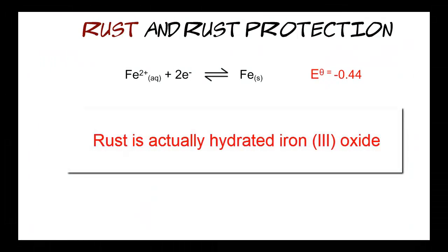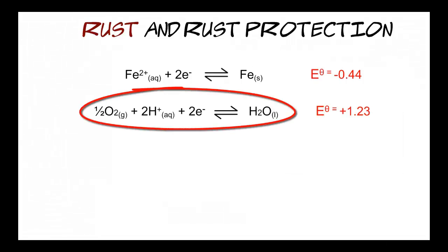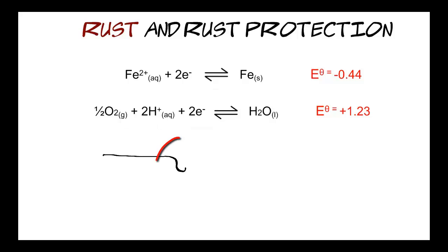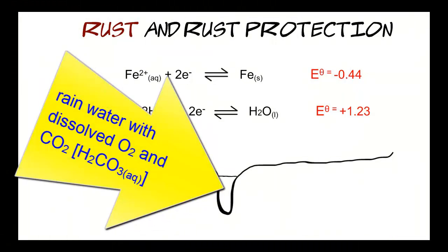In other words, which two do we choose to couple, and why? Of course, rust is actually hydrated iron 3 oxide, and for simplicity I've taken the half-equation for the reduction of iron 2 to iron. Circled is the important half-equation that you may not be familiar with. In rainwater, with dissolved air including carbon dioxide, you're going to have dissolved oxygen, and the CO2 will dissolve to form a weak solution of carbonic acid. So on the left of that half-equation, you've got both oxygen and hydrogen ions. Even on the most polished metal surface, you're going to have little pits and valleys, and the rainwater will get in there — with dissolved air including CO2 — and the CO2 will have reacted to form hydrogen ions in solution.